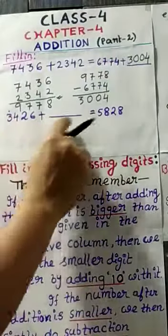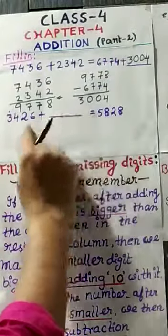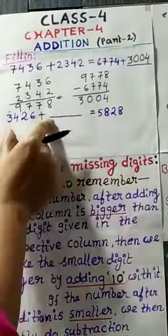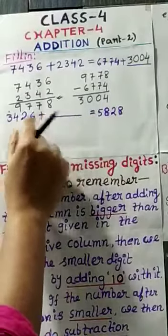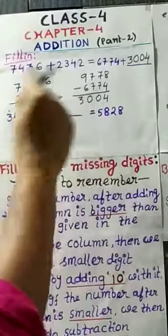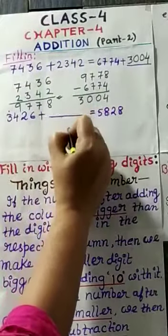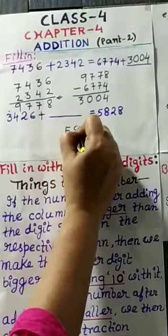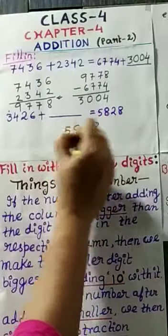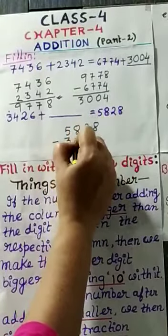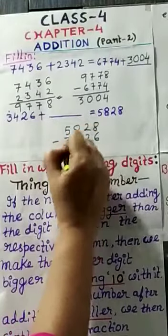Now, you see the second one. Here, the sum of two numbers is given. And here, among these two numbers, one number is given. We will have to find out the other number. Here, what we will do? We will simply do the subtraction. 5,828 minus 3,426.